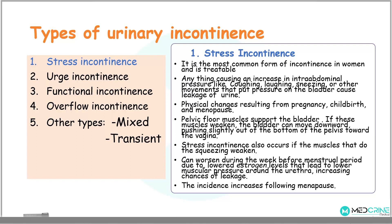What are the types of urinary incontinence? We have five types of urinary incontinence: stress incontinence, urge incontinence, functional incontinence, overflow incontinence, and other mixed types of incontinence.